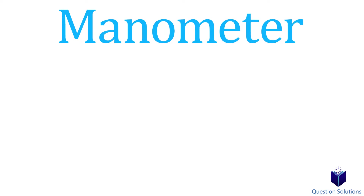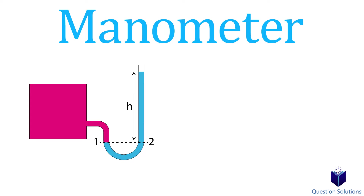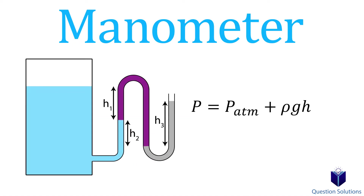A manometer is a device used to measure pressure differences using fluid columns. In a simple manometer, the pressure at point one equals point two since pressure doesn't vary with horizontal direction — going down increases pressure, but moving horizontally makes no difference. For a manometer with multiple liquids, pressure increases going downward and decreases going upward, so you add pressure when going down and subtract when going up, using the proper density for each liquid.